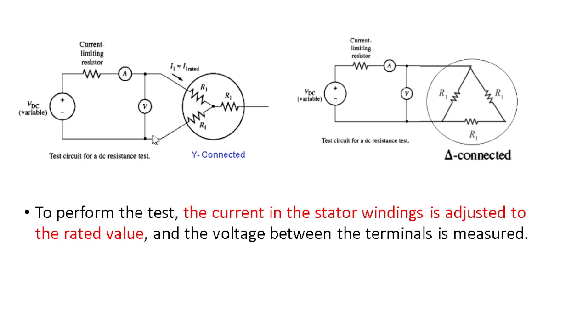When the rated current is achieved, we measure the voltage. The total resistance formula is R equals V over I. From the total resistance, we can calculate R1.